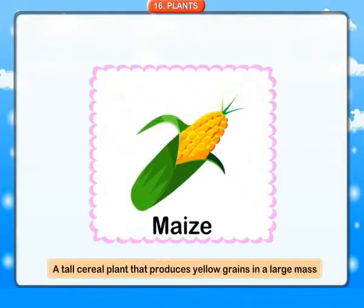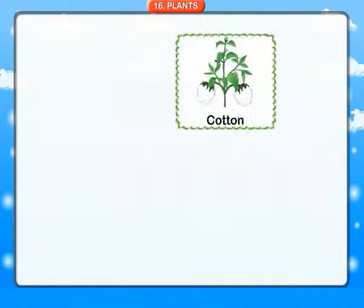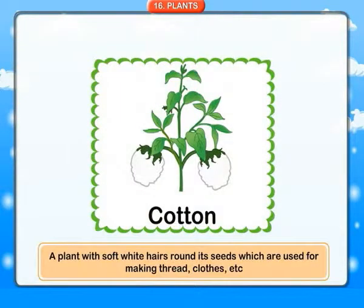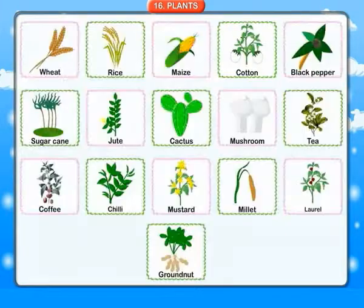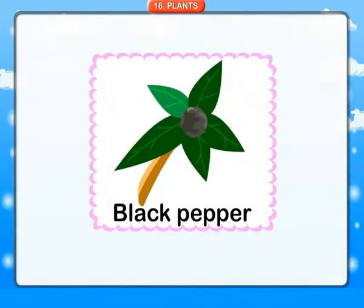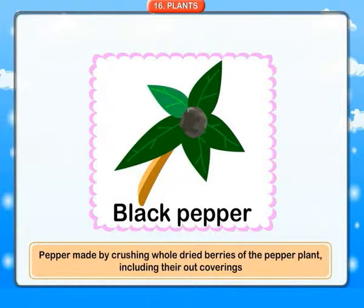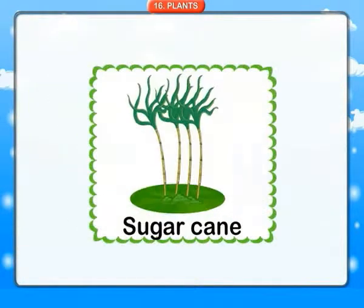Maize: a tall cereal plant that produces yellow grains in a large mass. Cotton: a plant with soft white hairs round its seeds, which are used for making thread, clothes, etc. Black pepper: pepper made by crushing whole dried berries of the pepper plant, including their outer coverings.